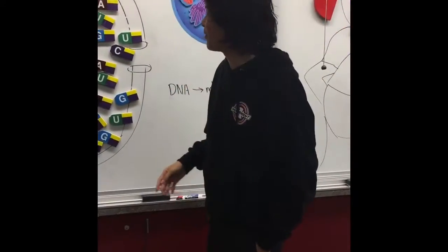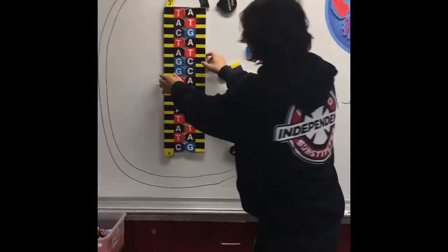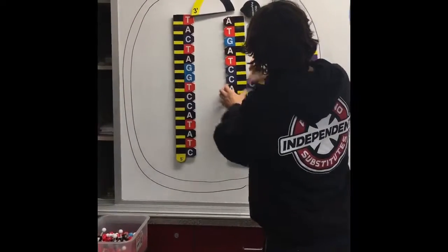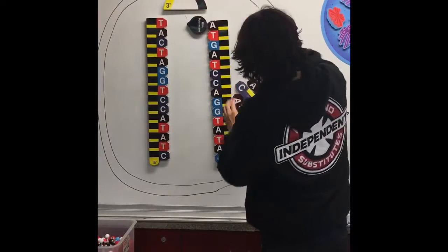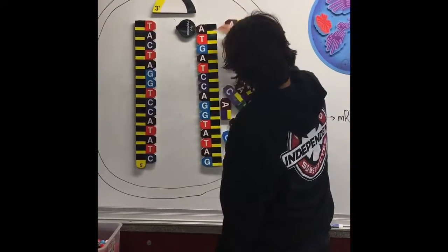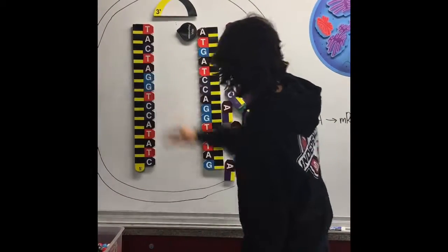Now we're going to be building mRNA and the first thing that needs to happen is DNA needs to open up. This allows the RNA polymerase to come in, and this is going to tell which corresponding nucleotides to go to their correct location.